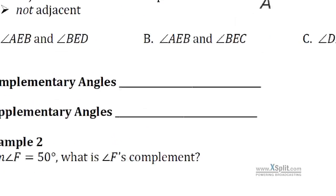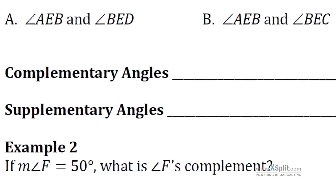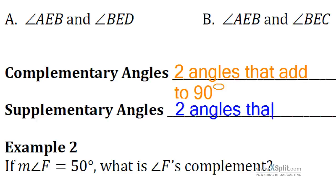A couple of terms for you real quick here. Something that you've probably seen in the past at some point. Complementary and supplementary angles. Complementary are going to be two angles that add to 90 degrees. And then supplementary angles are going to be two angles that add to 180 degrees. So we could say a linear pair is going to be a supplementary set.